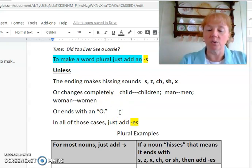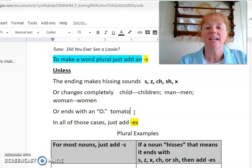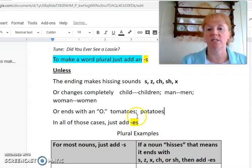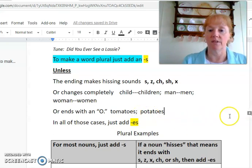Nouns that end with O, like tomato, you have to add E-S. So, make sure I spell this right. Tomato. There we go. Add the E-S to make it plural. Okay? Or potato. Add the E-S to make potatoes. Do you think Francis liked tomatoes and potatoes? In all of those cases, add E-S.